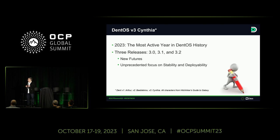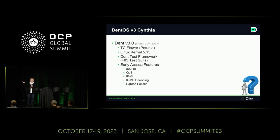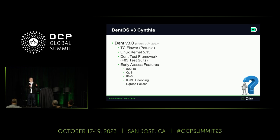To be able to do that, we really focused on stability and deployability across three different releases. The first one came out in March of this year. It includes features and we updated the kernel to a more recent LTS release, 5.15. We also included a test framework — it had a limited set of tests, 85 test suites. But it provided the groundwork for us to automate the entire testing environment, make sure that the functionality is working, regressions are not happening, and validate the functionality in a continuous way.